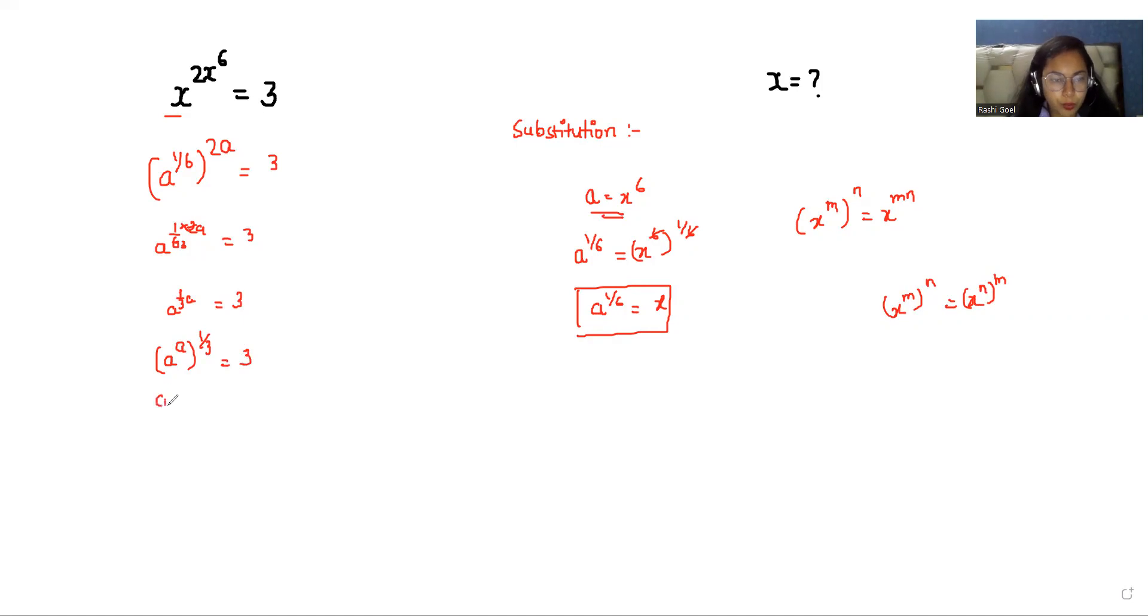Now cube both sides. Now I eliminate this 3 by 3. So we get A^A equals 3^3.